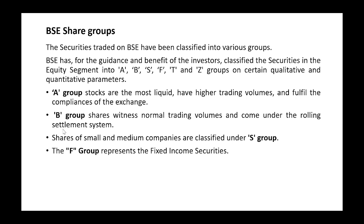B Group shares have normal trading volume and come under the rolling settlement system, which follows T plus 2 days. Just below A Group is B Group. They are of normal trading value — not as highly valued or liquid as A Group. They have medium demand and follow the rolling settlement system.